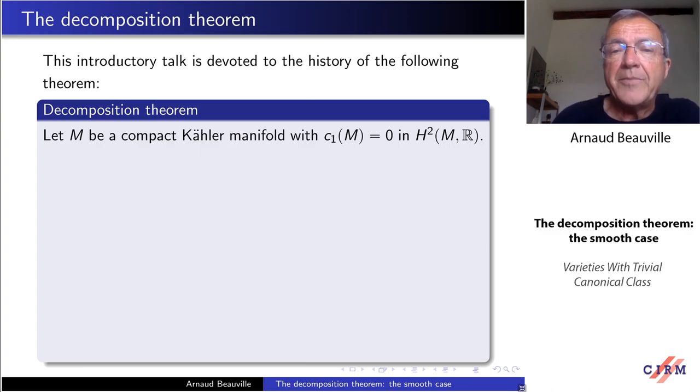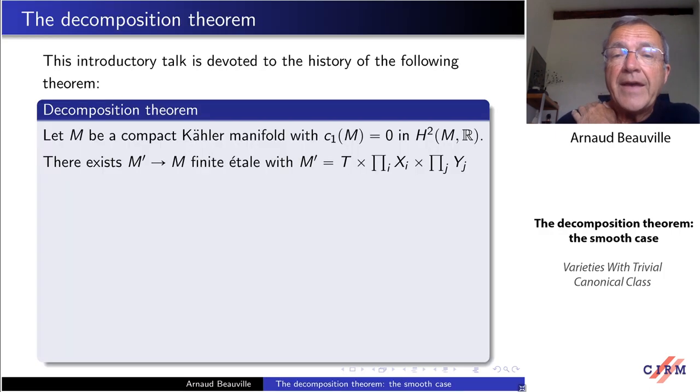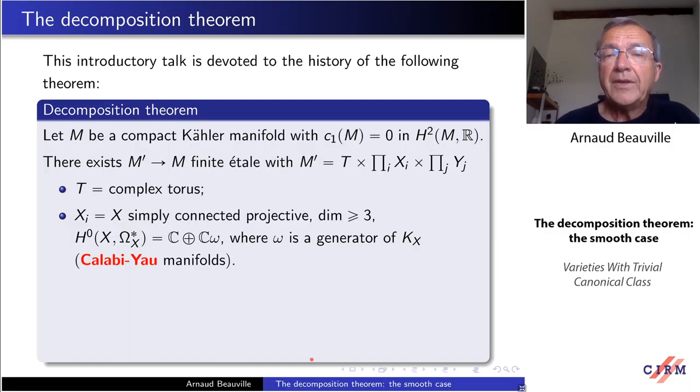We start with a compact Kähler manifold with trivial first Chern class in cohomology. Then to a finite étale covering, this manifold M or M prime is a product of three types of very specific manifolds. T here is a complex torus, the second type, the xi, which I will simply denote by x, are simply connected, projective manifold of dimension at least three, and they have basically no holomorphic forms except the constant in degree zero and one form of maximal degree, which is the generator of the canonical bundle Kx. These are usually called Calabi-Yau manifolds, though the terminology is not completely fixed.